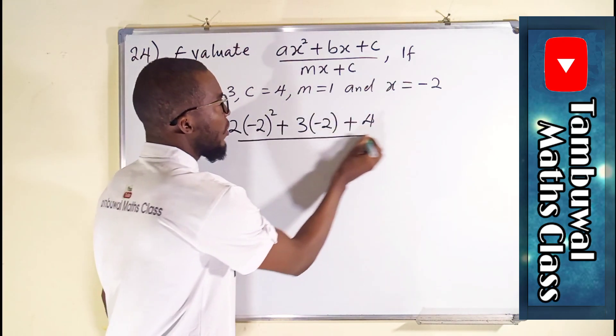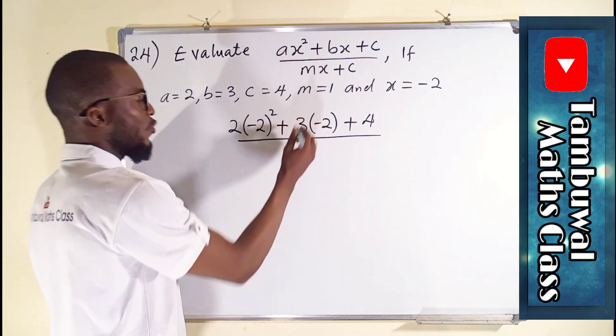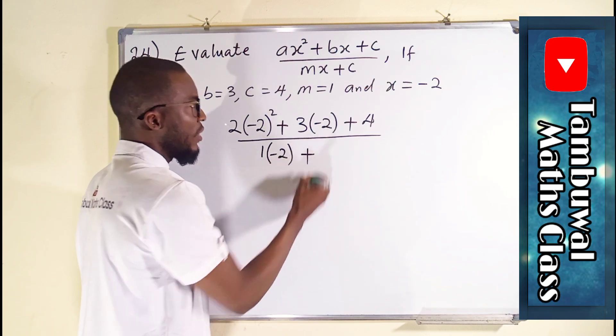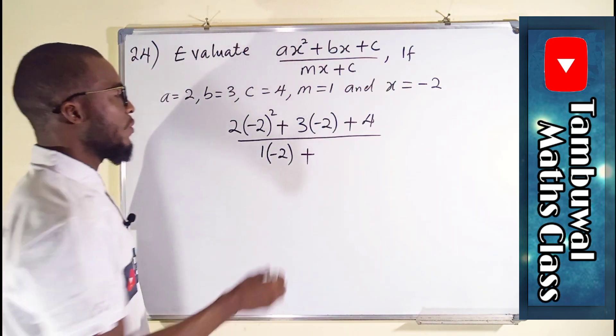You divide all by m times x. Our m is 1 and our x is minus 2. And lastly we have c which is 4.